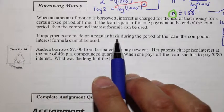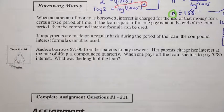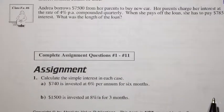If repayments are made on a regular basis during the period of the loan, the compound interest formula cannot be used because there's a payment. And so then there's a different formula to use there. Here, let's take a look at class example 6.